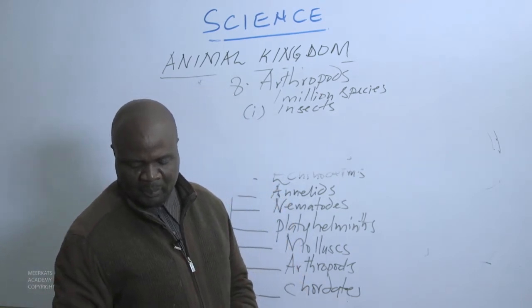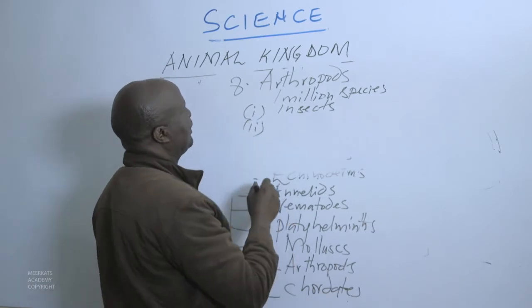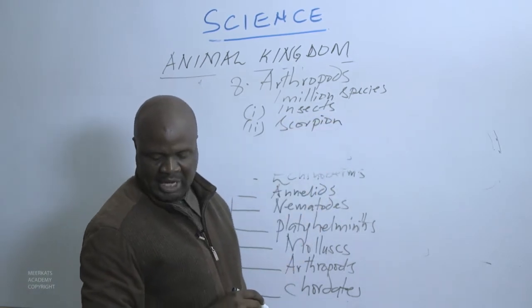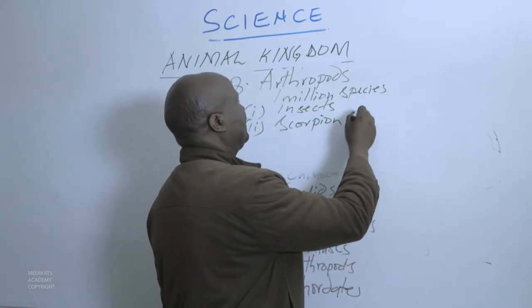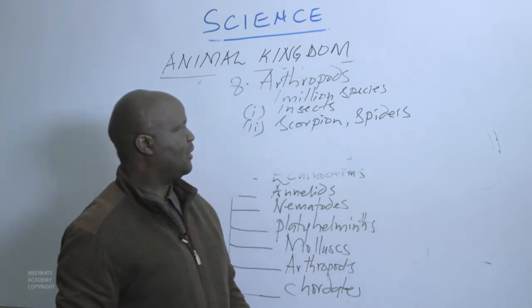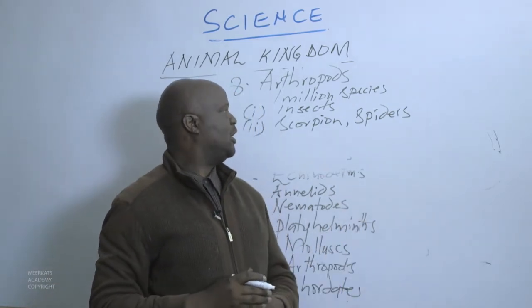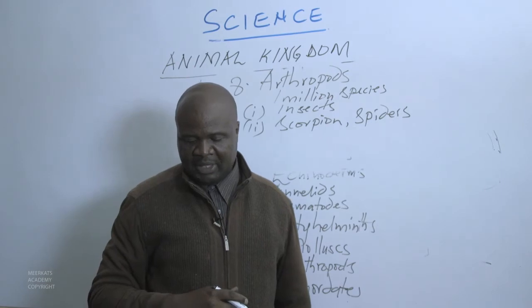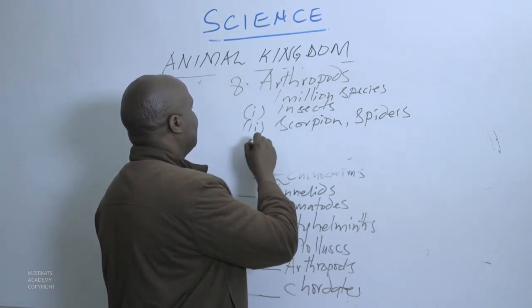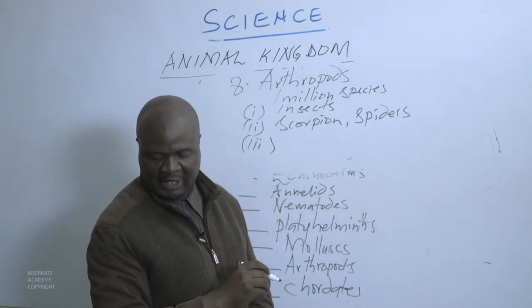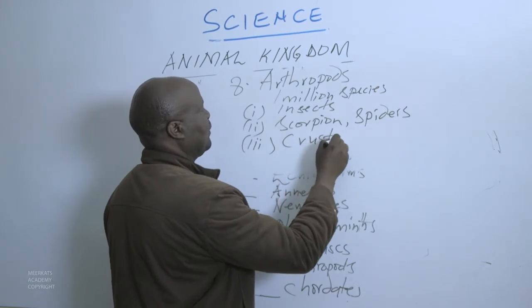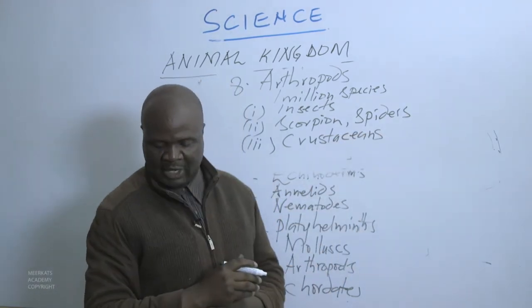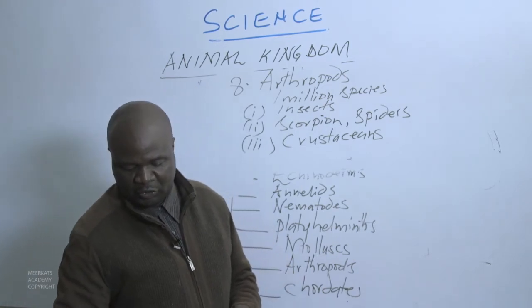This phylum includes animals we meet in day-to-day activities. We have insects, which belong to this phylum of Arthropods — their bodies are divided into three body parts. We also have scorpions and spiders, which also fall under this category — they have stings, can bite, and are poisonous. Another group found within Arthropods is the crustaceans.